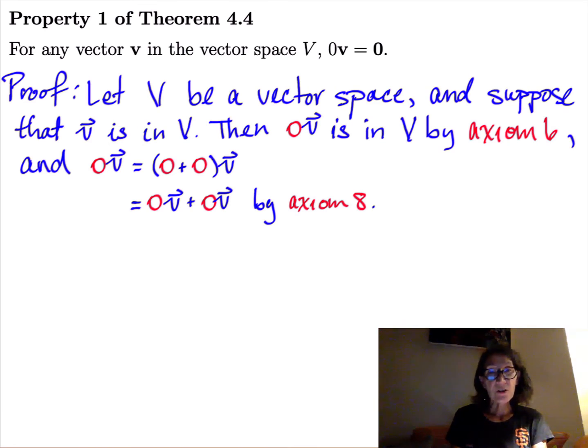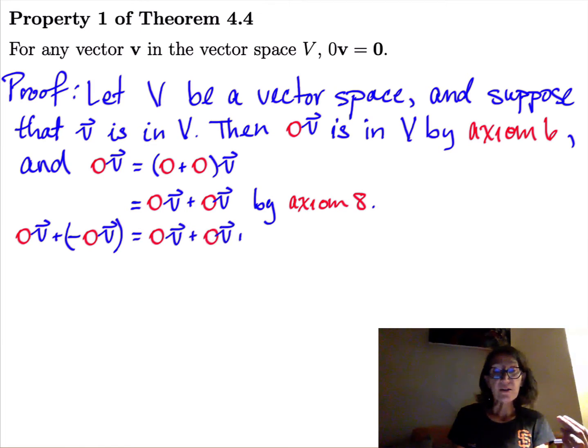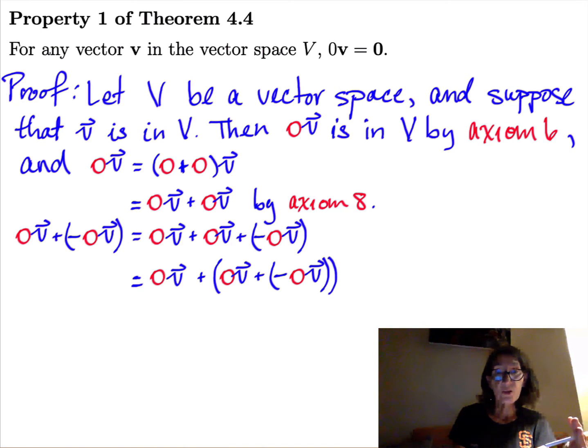And now what I'm going to do is I'm going to add something to both sides, namely, I'm going to add the additive inverse of 0 times v. Remember, I don't know what 0 times v is, but I know it has an additive inverse because we're talking about a vector space. So I'm adding the additive inverse of 0 times v to the left side, and then I'm adding it to the right side. Now, on the right side, I can use the associative property to regroup those vectors. So that's axiom 3. I just used an associative property.